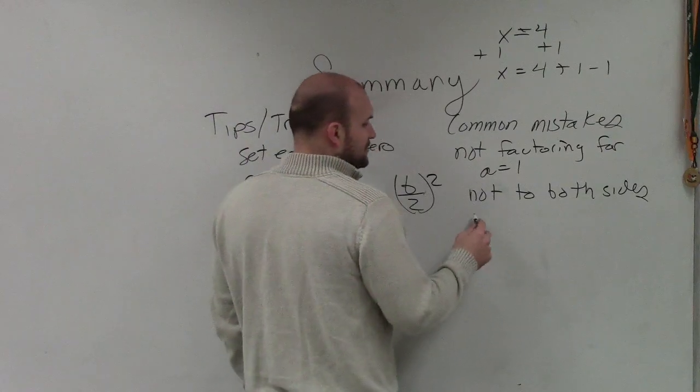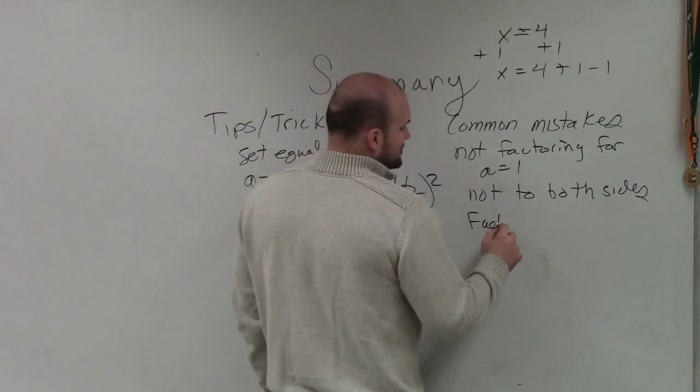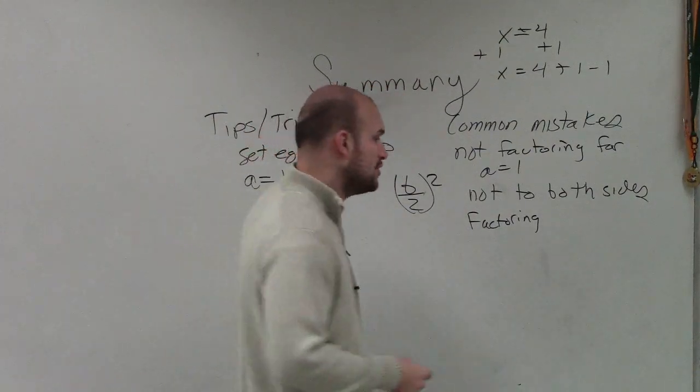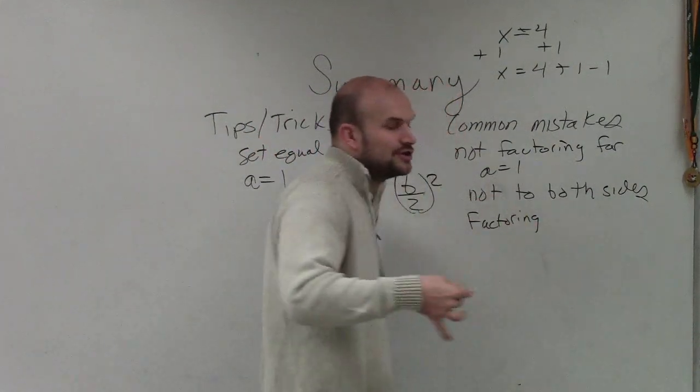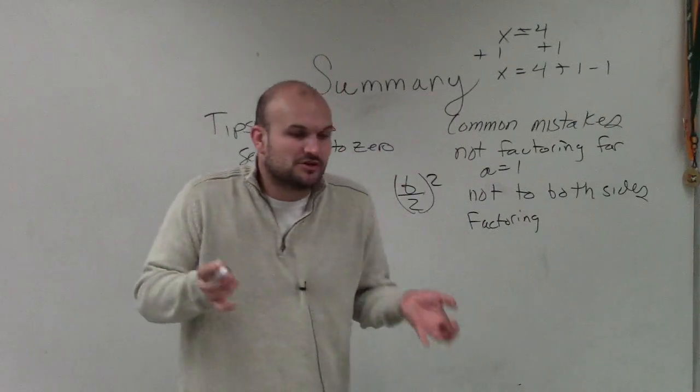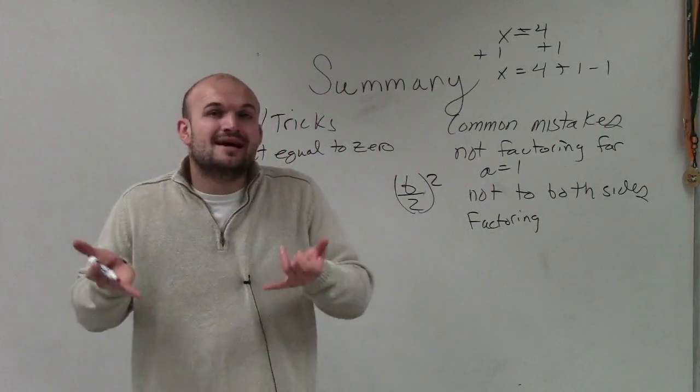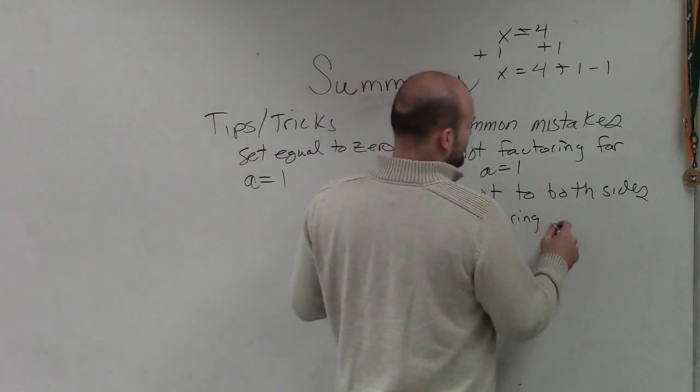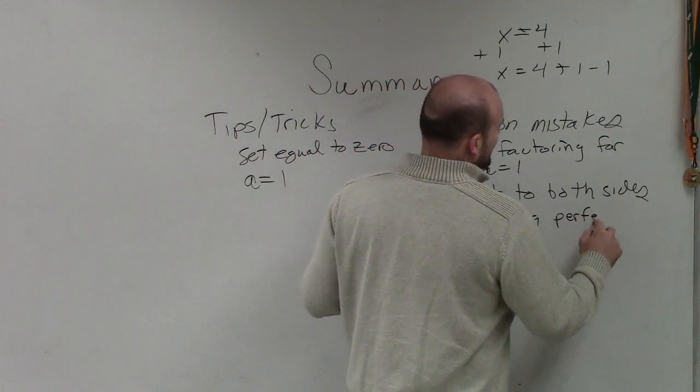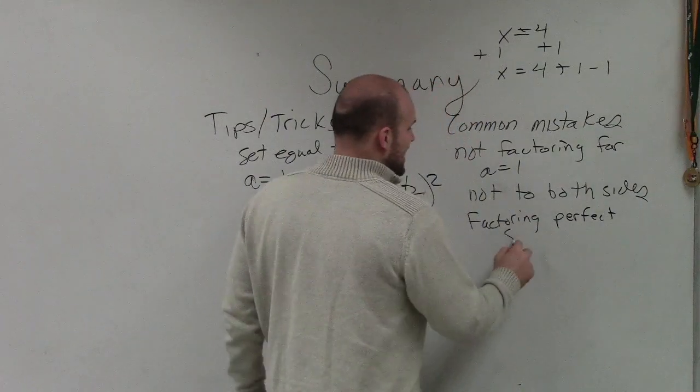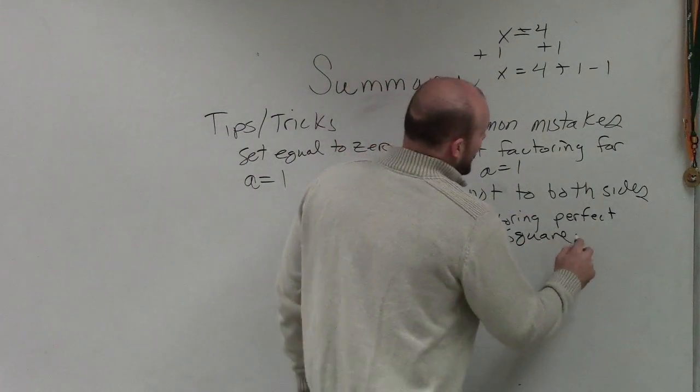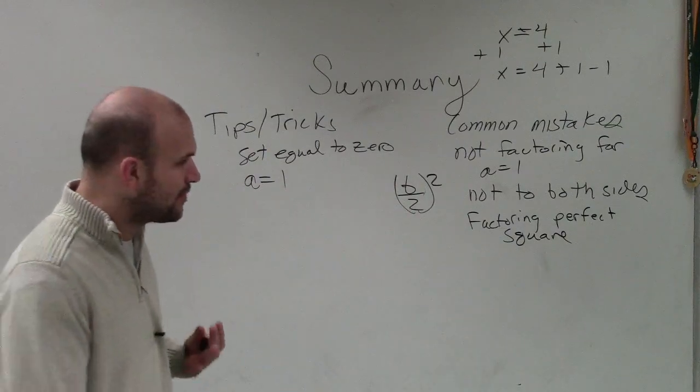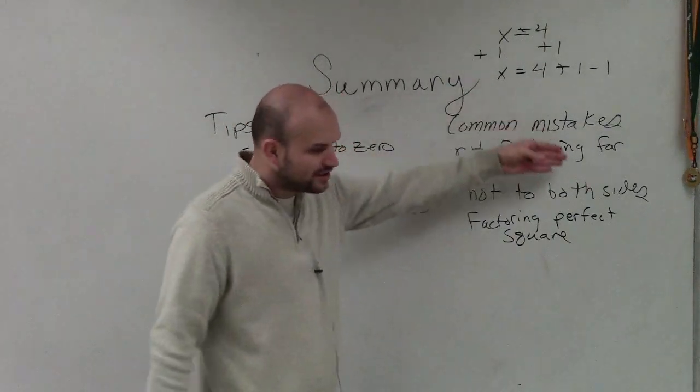Another really common mistake is factoring your perfect square. And this is one thing that I talked about in what are the things that you need to know for this. You have to know your perfect squares, because what we're going to do is create perfect square trinomials. You have to know how to factor a perfect square trinomial into a binomial square. So factoring a perfect square is a common mistake that students have because they forget how to factor perfect square trinomials.